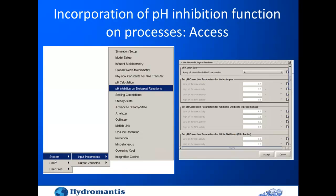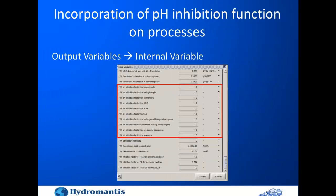To access this in GPSX, right-click and open the system menu. Under input parameters, there is 'pH inhibition on biological reactions.' By default, it is set to 'no,' but you can set it to 'yes' to apply the correction, using the default parameter values. To see the inhibition factor values in use, go to any object's output variable, then internal variable, scroll down, and you can see the inhibition values. For example, the pH inhibition factor for heterotrophs is 1 when the correction is not applied; when applied, values will reflect the actual pH in the model.